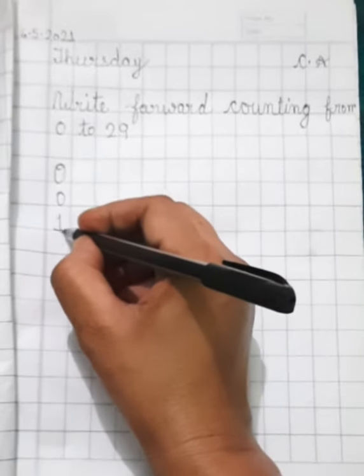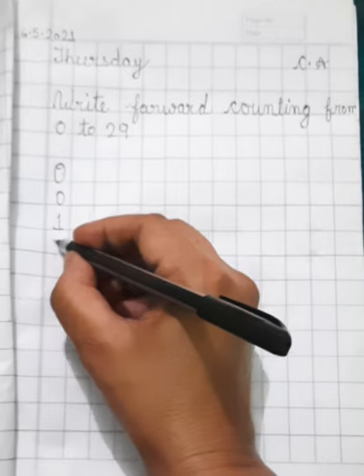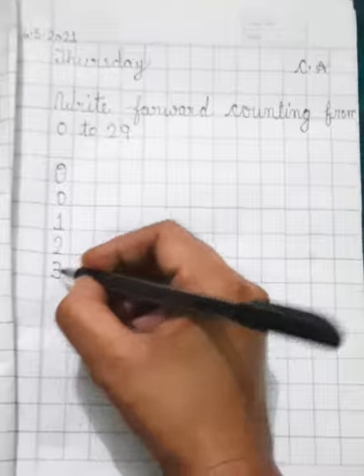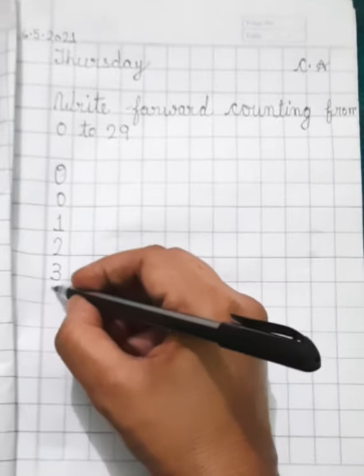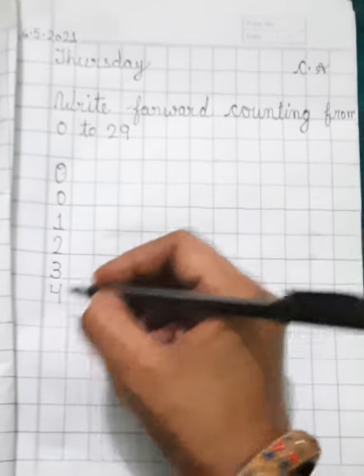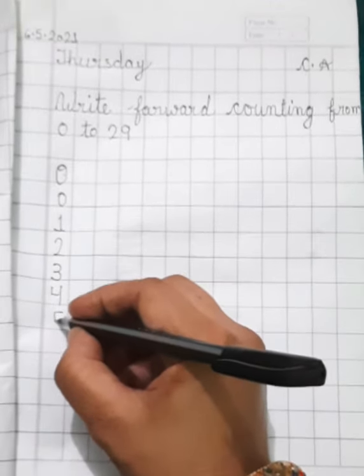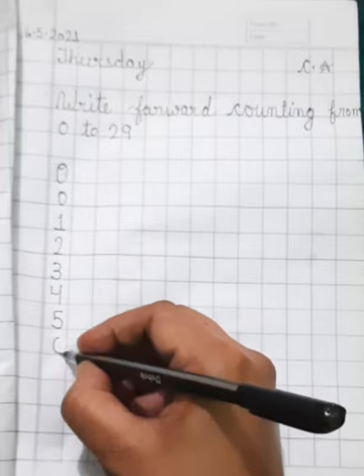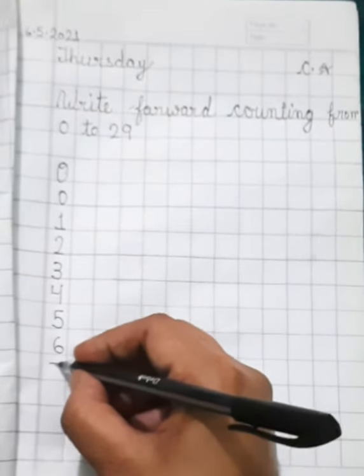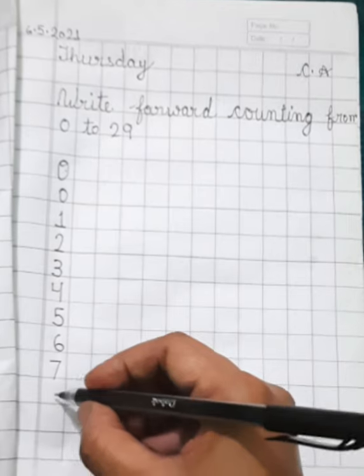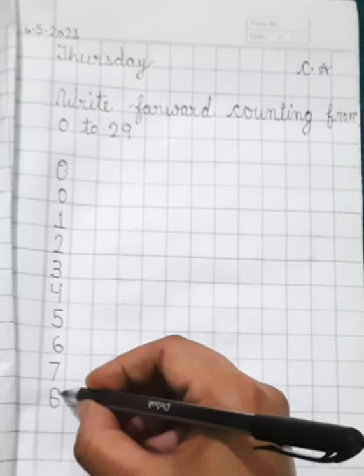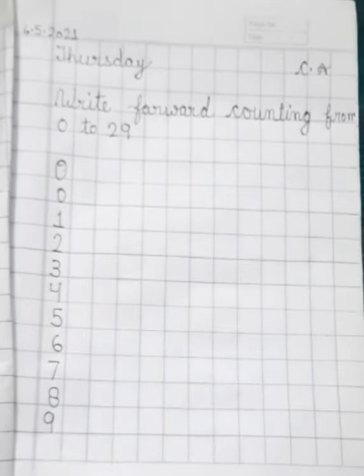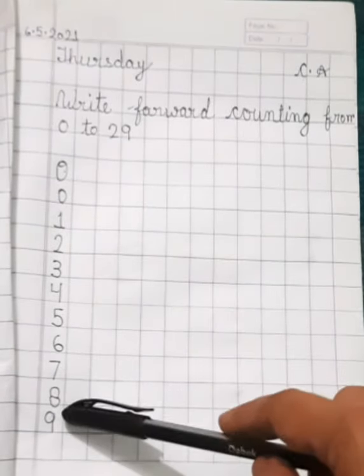Then one, two, three, four, five, six, seven, eight, then nine. Zero to nine numbers.